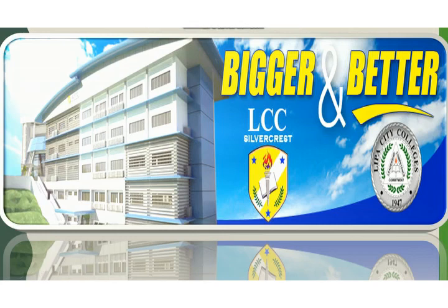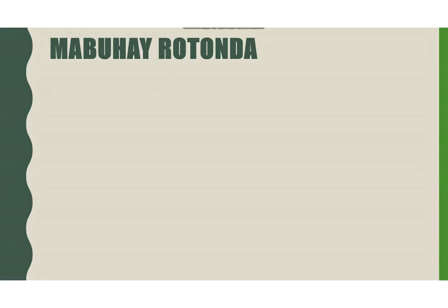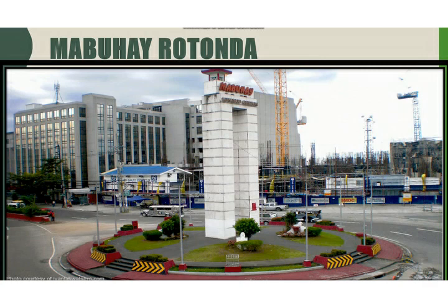Today we'll discuss the last topic for the first chapter: uniform circular motion. Our topic is entitled 'Going Around in Circles.' Before we continue, get your book Practical Science 8 and open it on page 28. This topic is a bit confusing, so make sure your full attention is here. Between Manila and Quezon City there is a small roundabout popularly known as Mabuhay Rotonda, which can help demonstrate the physics lesson of uniform circular motion or UCM.